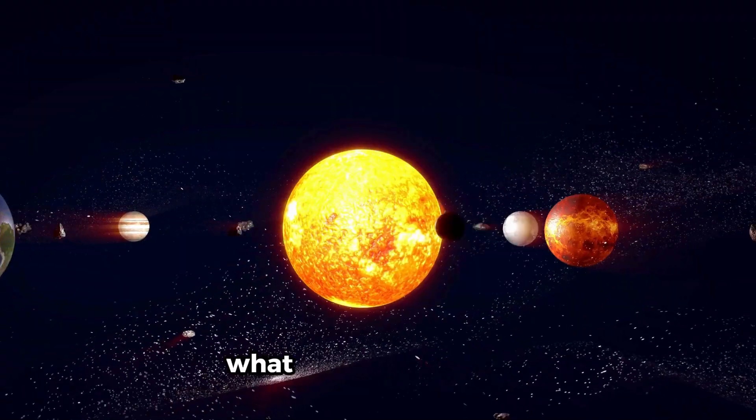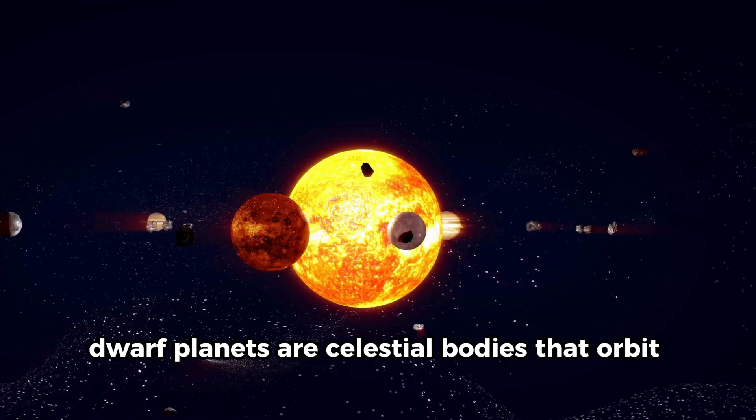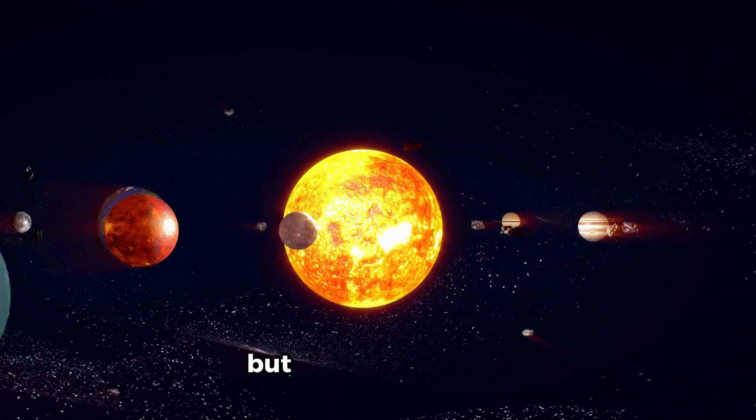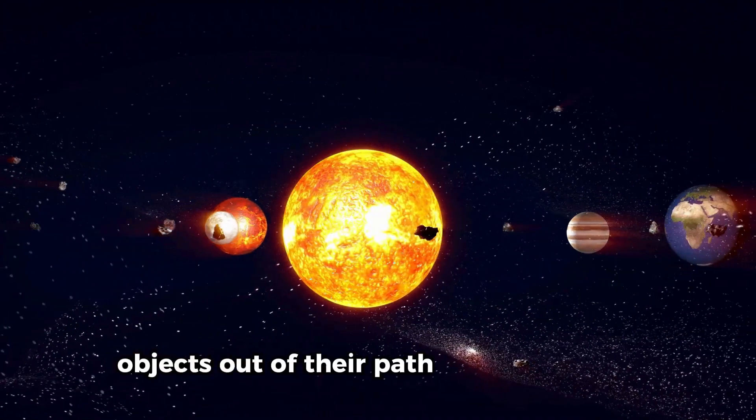Dwarf planets. What are dwarf planets? Dwarf planets are celestial bodies that orbit the Sun, just like planets, but they are smaller. Unlike planets, they haven't cleared other objects out of their path around the Sun.